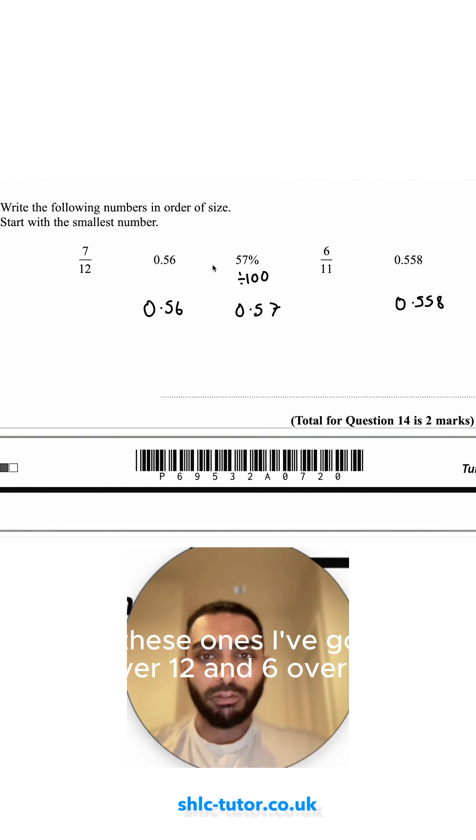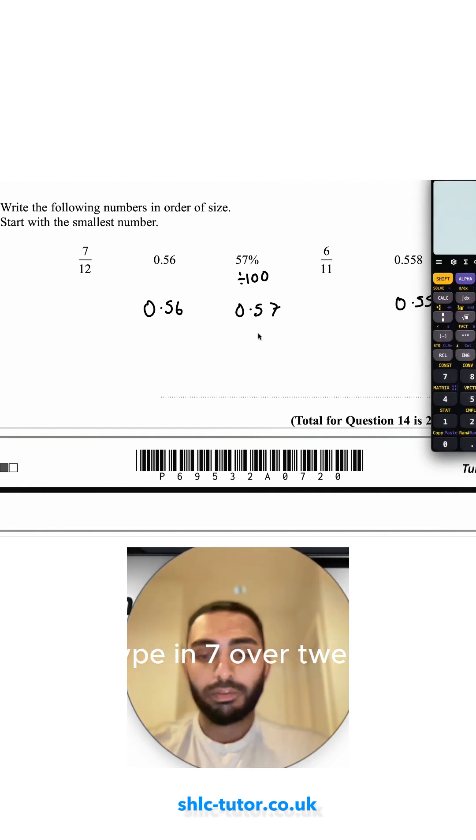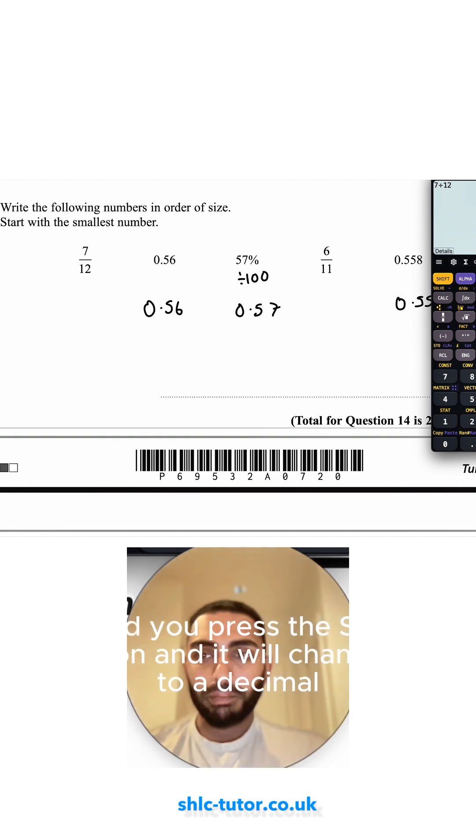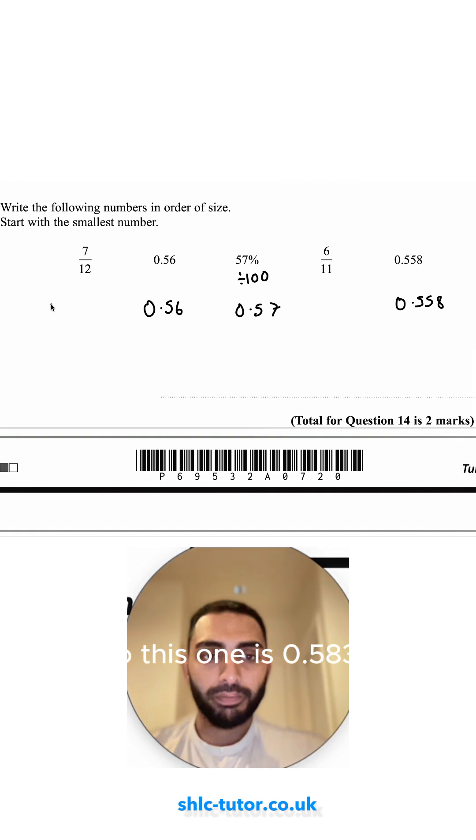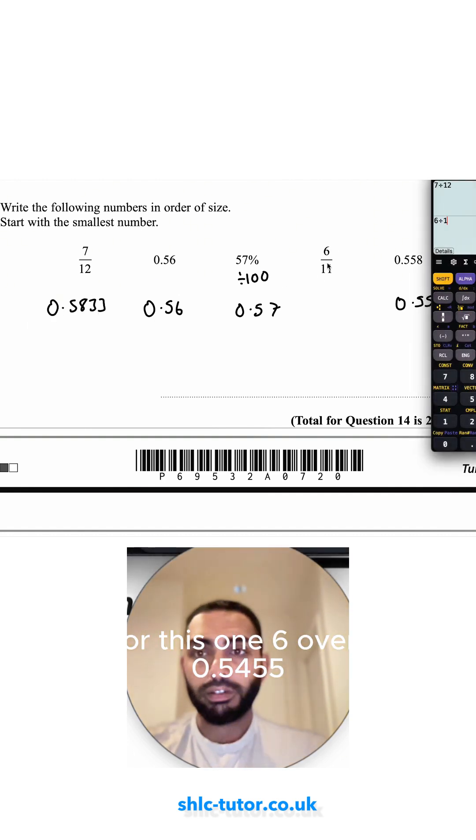For these ones, I've got 7 over 12 and 6 over 11. I can just do this on my calculator. I type in 7 over 12, and you press the STD button, and it will change it to a decimal. So this one is 0.5833. And for this one, 6 over 11 is 0.5455.